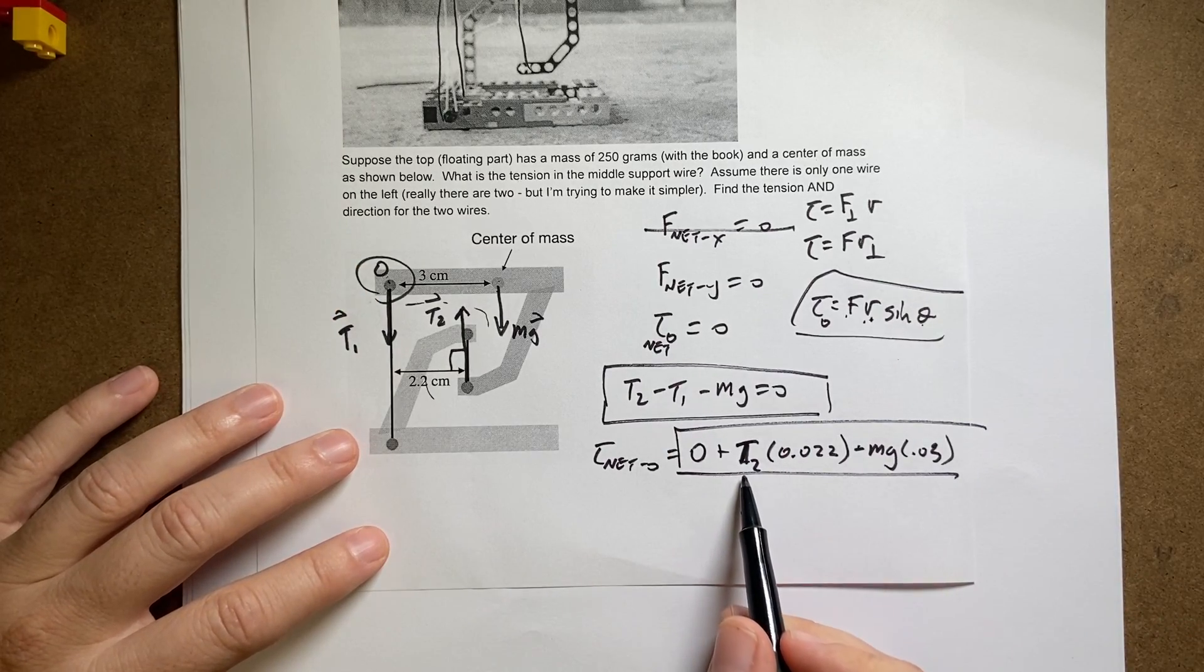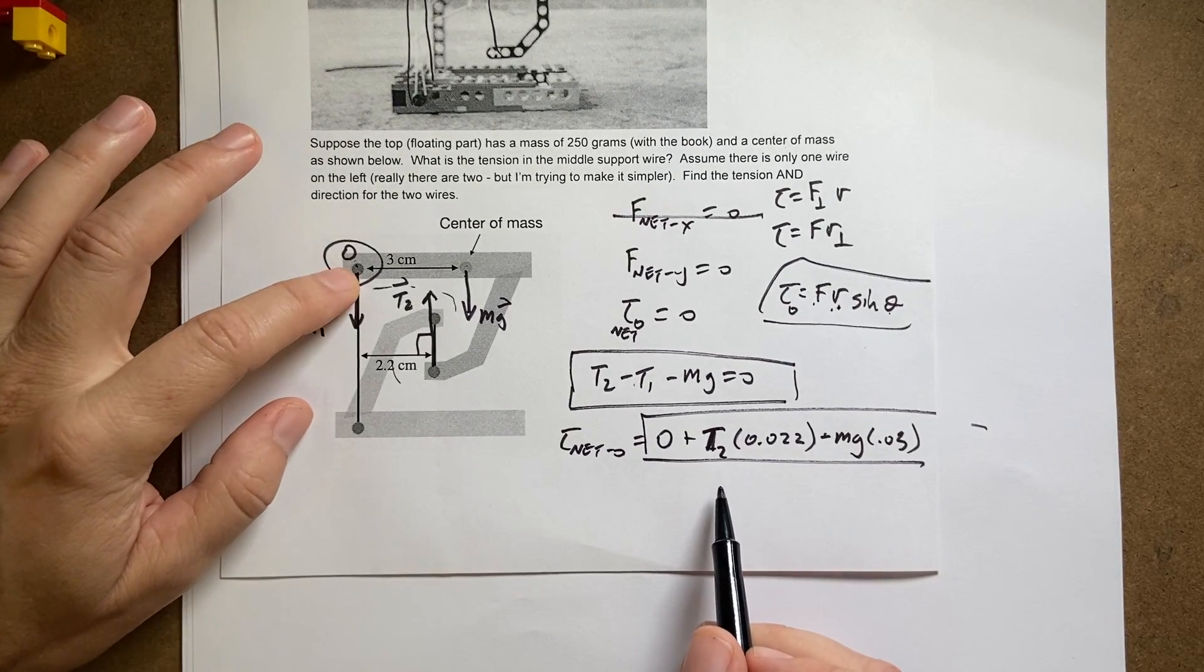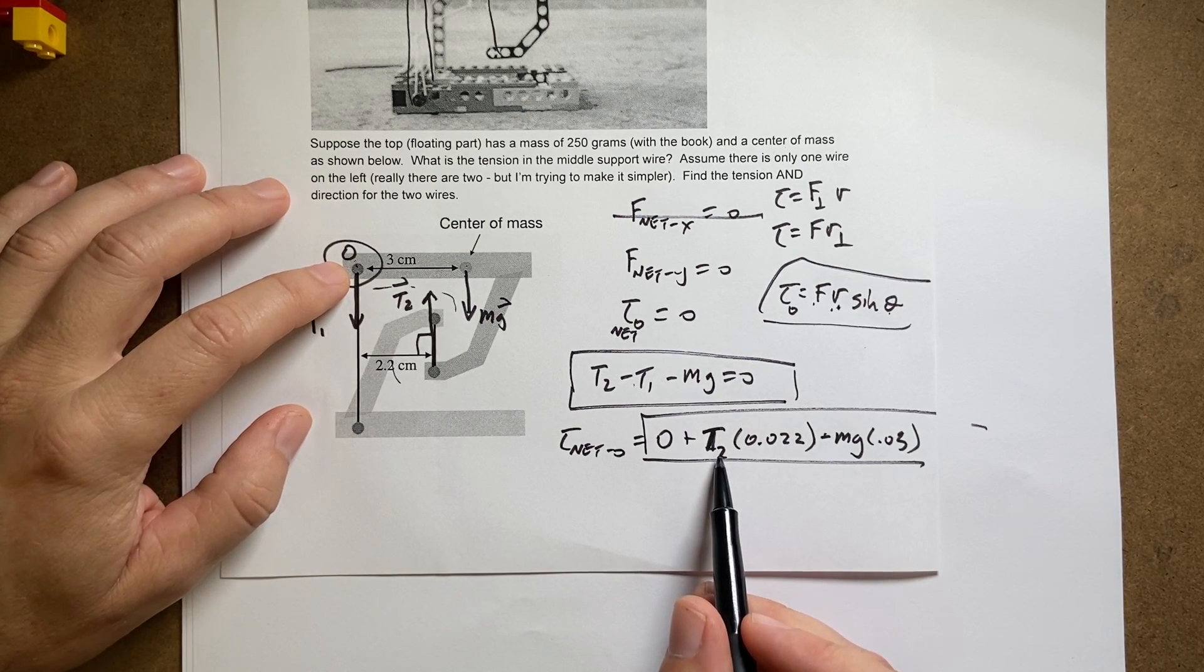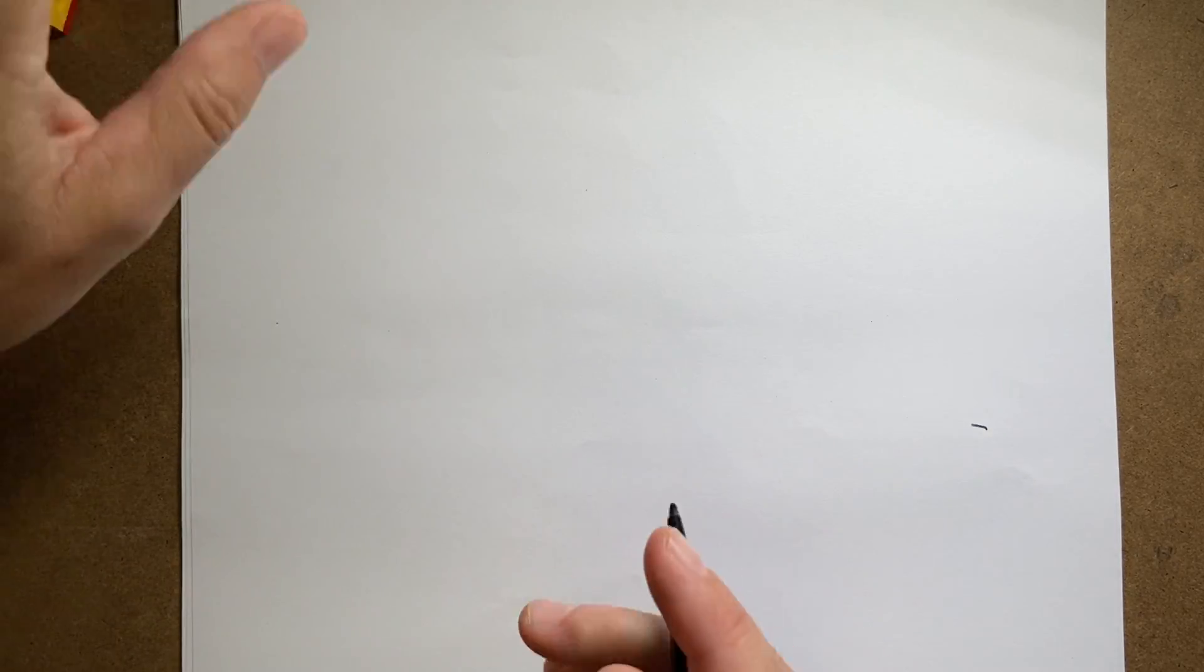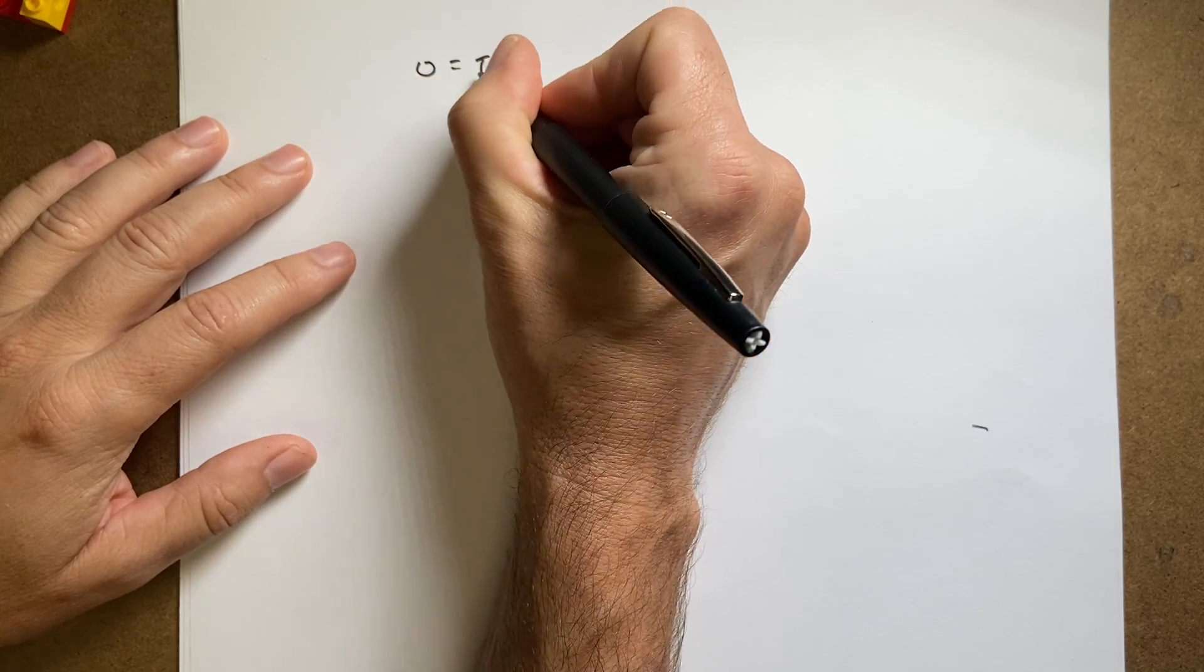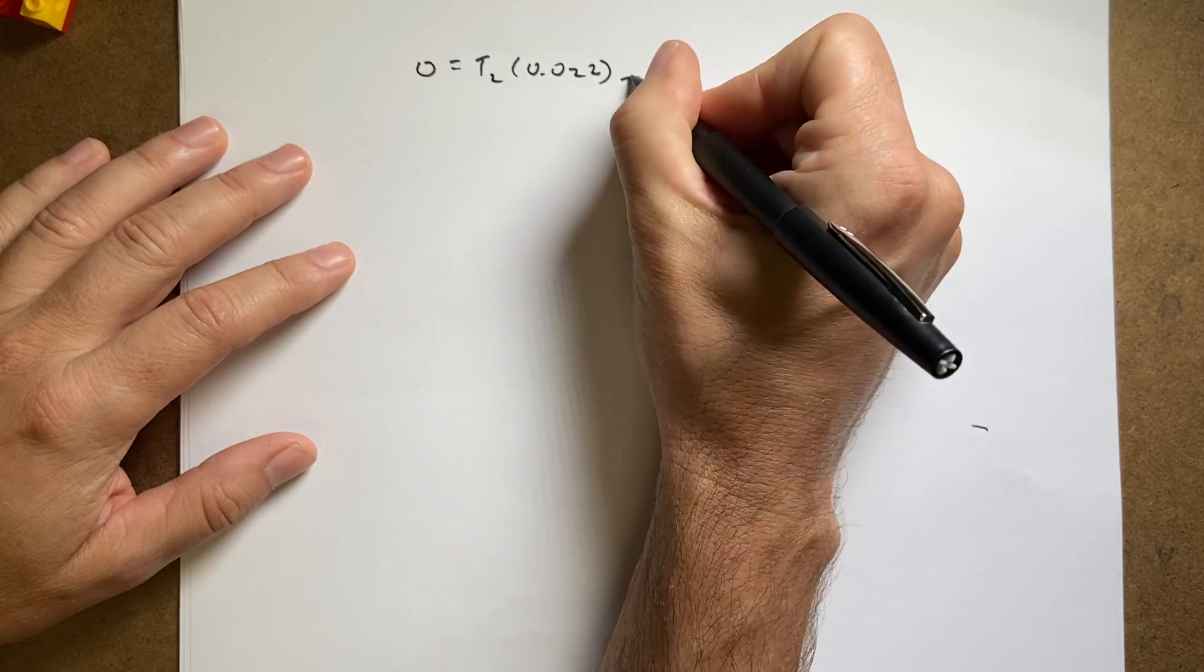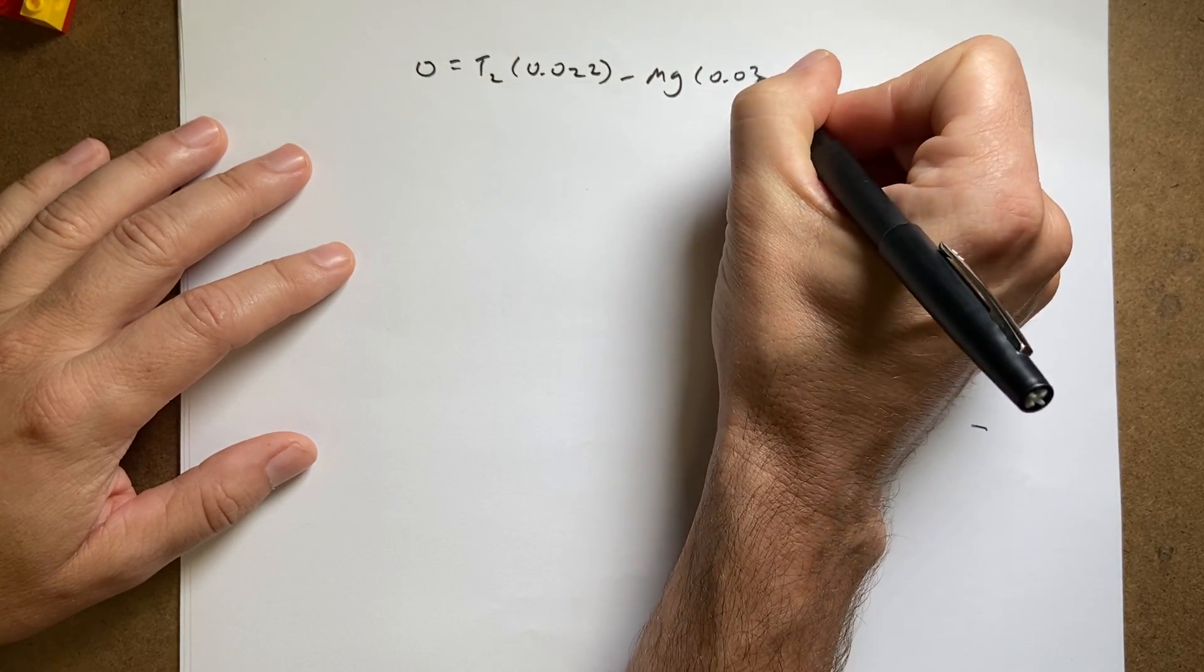So I can solve this equation for T2 and then plug it in up here. By picking that point, I have made an equation with only one variable in it, so that makes it easier for me. Okay, so I'm going to rewrite that equation. I have 0 equals T2 times 0.022 minus mg times 0.03.